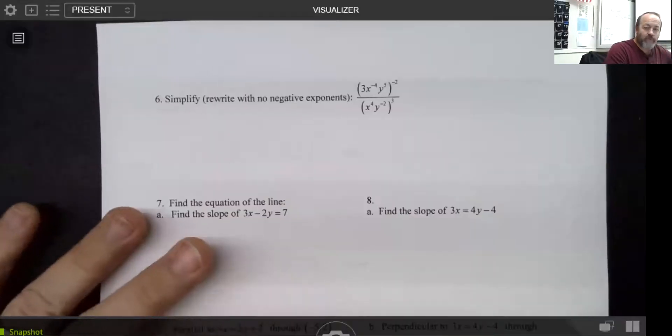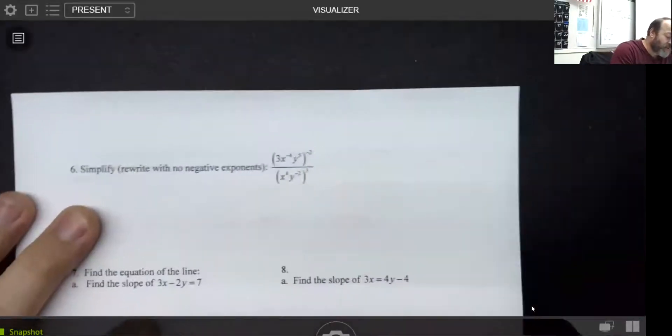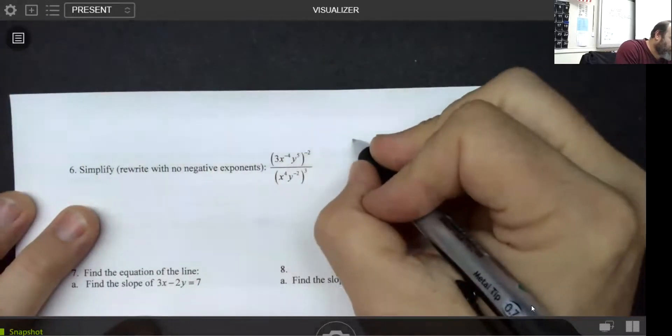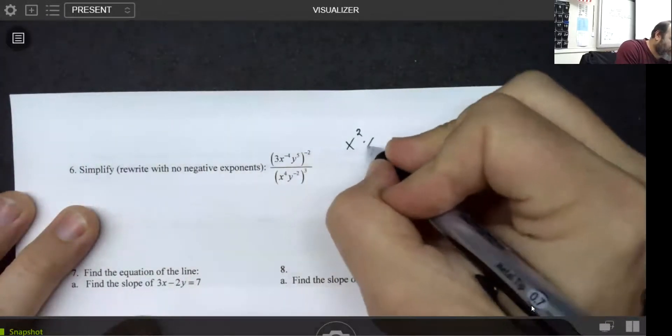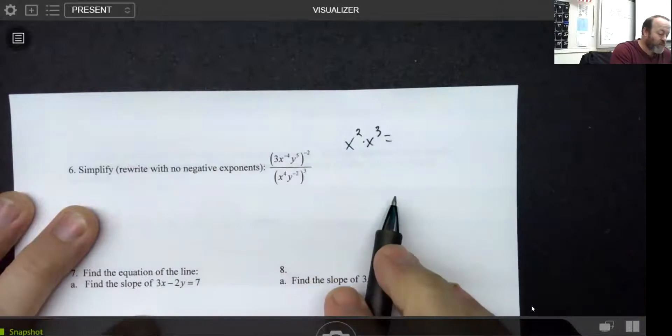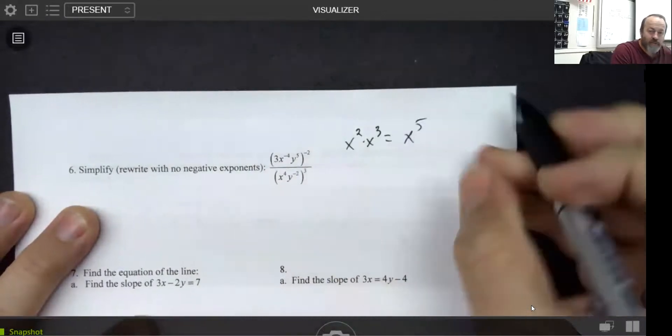What you want to remember is that there's a bunch of rules of exponents, and one of those rules of exponents is if you multiply two things that have exactly the same base, then what you do is you add those two exponents.